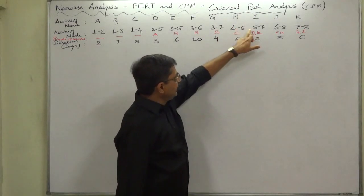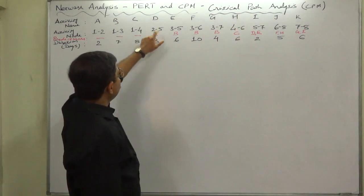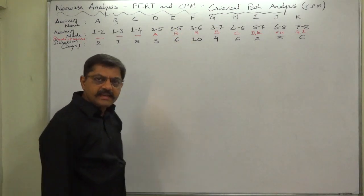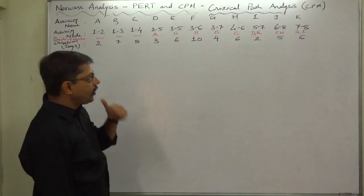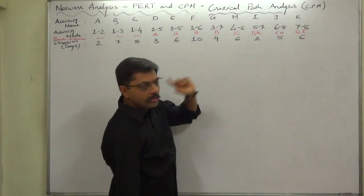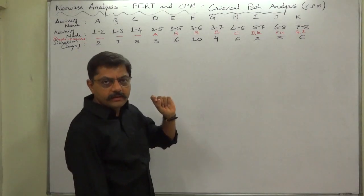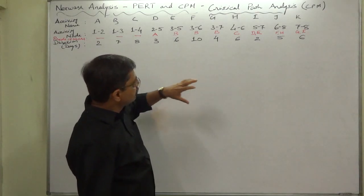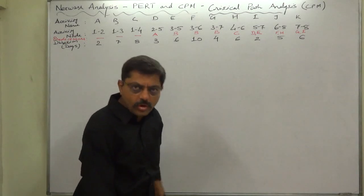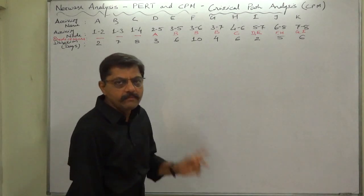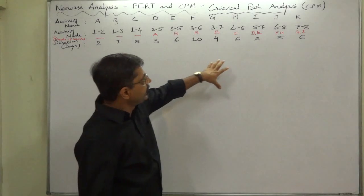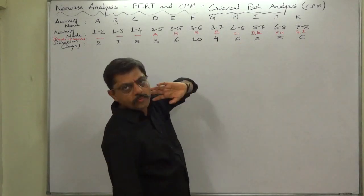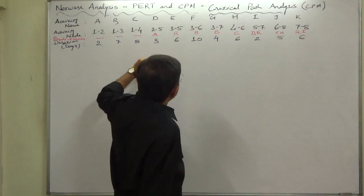I starts at node number five, and D and E both end at node number five - that means D and E are predecessors of I. We shall have to take care at the time of drawing the chart so that without use of dummy activities, or with minimum use of dummy activities, we can draw the chart in situations where there are two or more common predecessors.